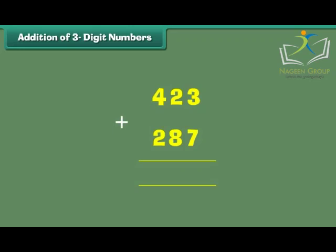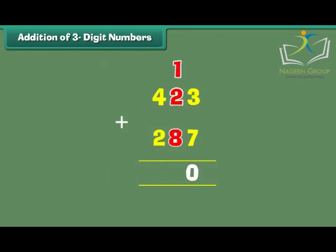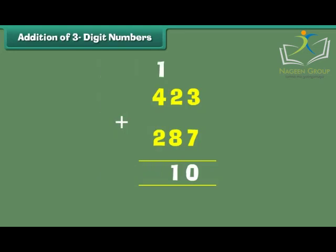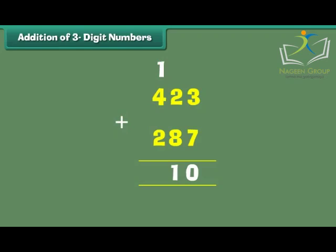Let us now learn to add two 3-digit numbers with carrying. What is 423 plus 287? The digits at the 1s place are 3 and 7. 3 plus 7 is equal to 10. Write 0 at the 1s place and carry over 1 to the 10s place. The digits at the 10s place are 1, 2 and 8. 1 plus 2 plus 8 is equal to 11. Write 1 at the 10s place and carry over 1 to the 100s place. The digits at the 100s place are 1, 4 and 2. 1 plus 4 plus 2 is equal to 7. Therefore, 423 plus 287 is equal to 710.